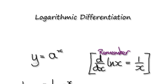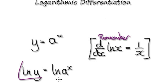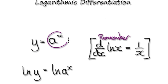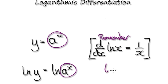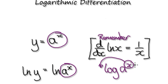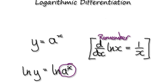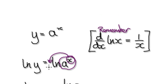Start by taking the natural log of both sides. Then one of the laws on logs is that whenever you log something to the power of another thing, you can actually take the exponent out front. So that's also true with the natural log — if you natural log a to the power of x, you can take the x out.